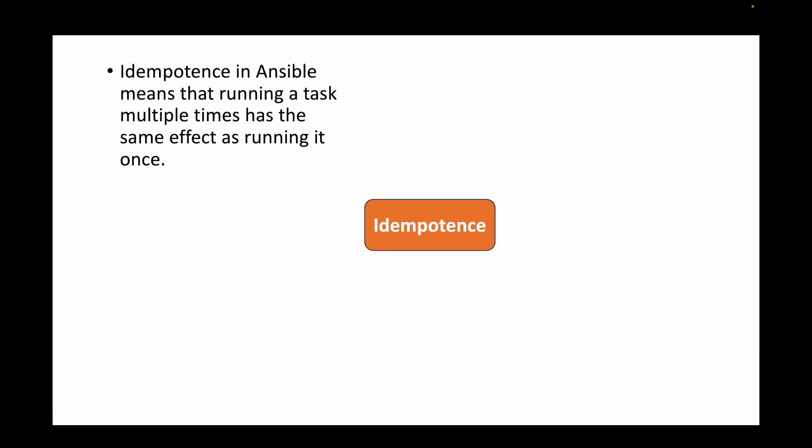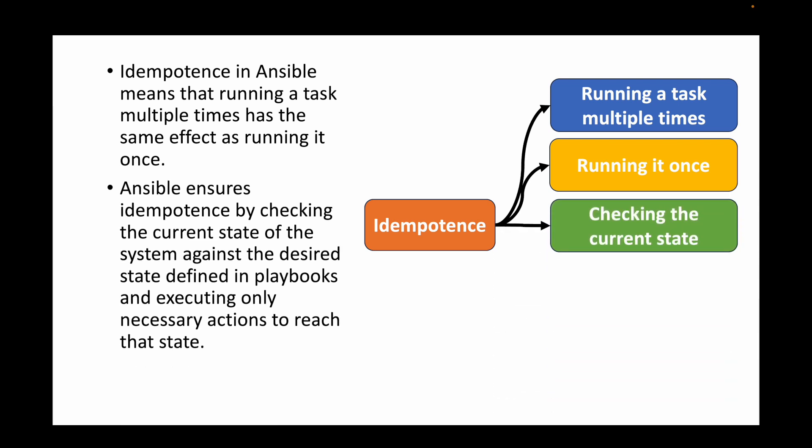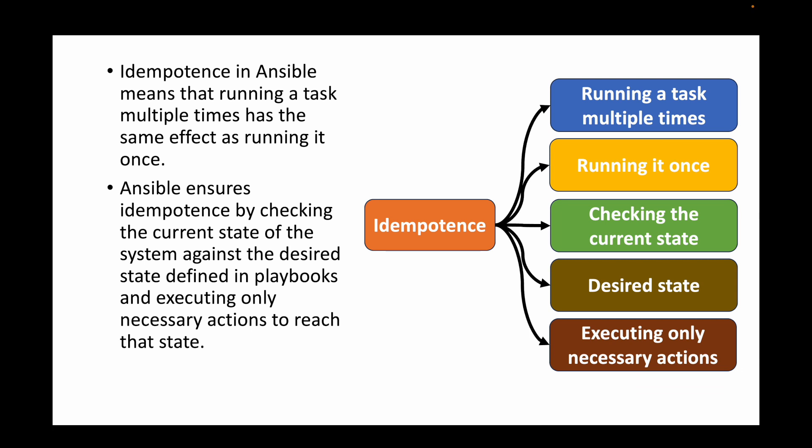The next question is: explain the concept of idempotence in Ansible. Idempotence means running a task multiple times produces the same result as running it once. Ansible ensures idempotence by checking the current state of the system against the desired state defined in playbooks, and executing only the necessary actions to reach that state. Rather than executing tasks repeatedly, it compares current versus desired state and only acts when they differ.